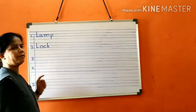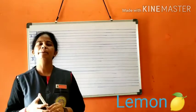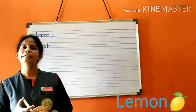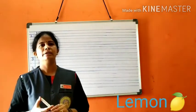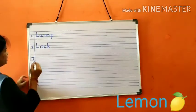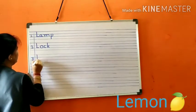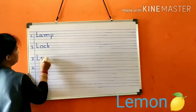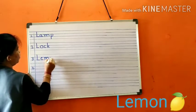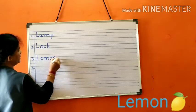Third word is lemon. Lemon means limbehand. It is a citric fruit. Shall we write the spelling of lemon children? L-E-M-O-N, lemon.